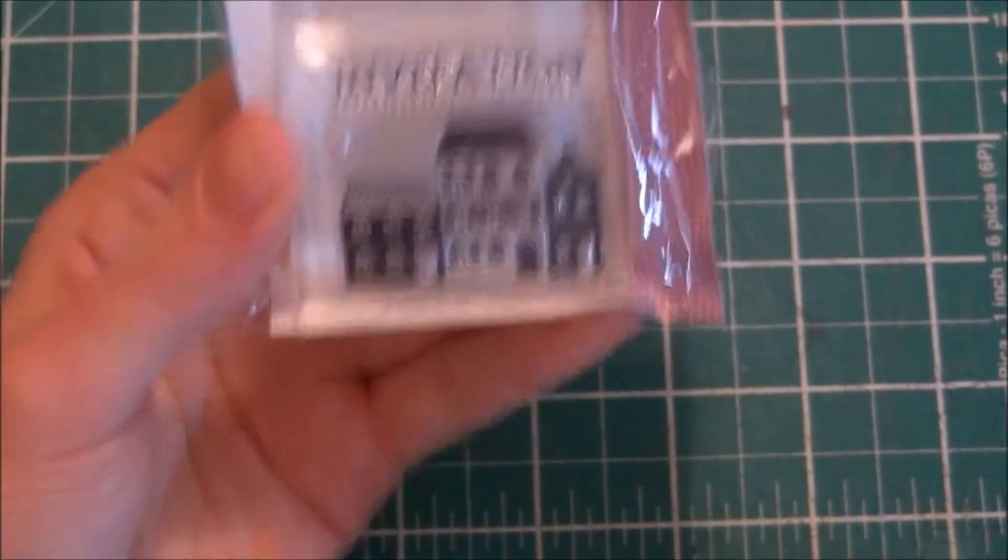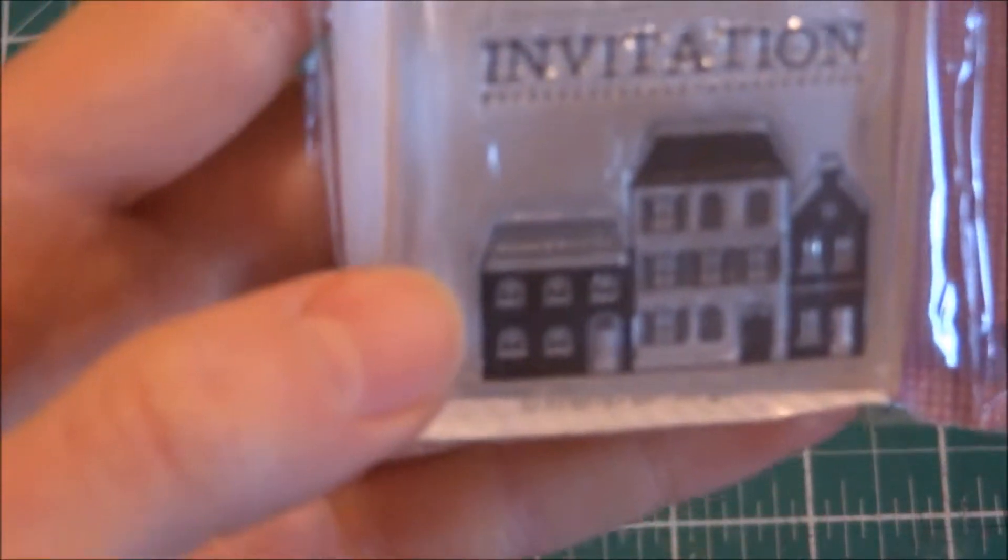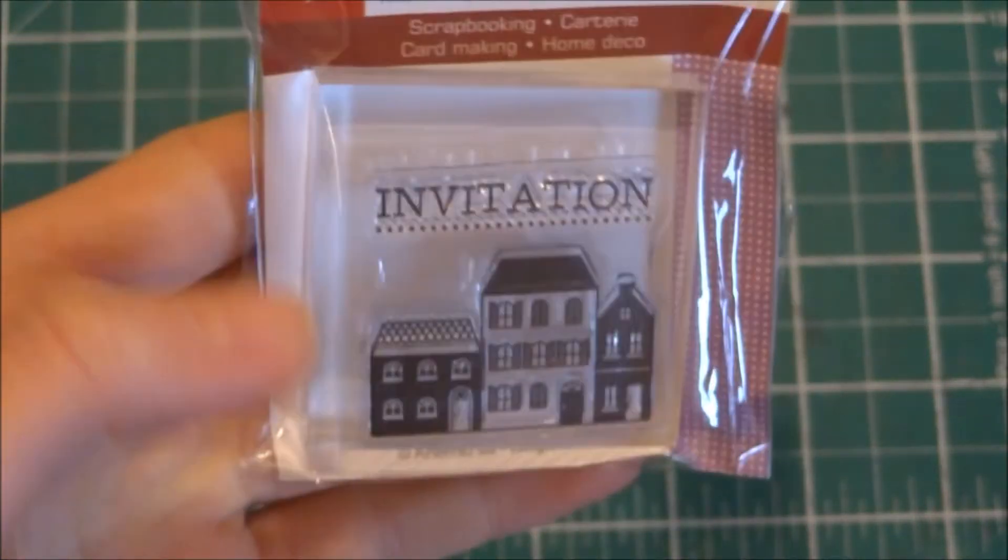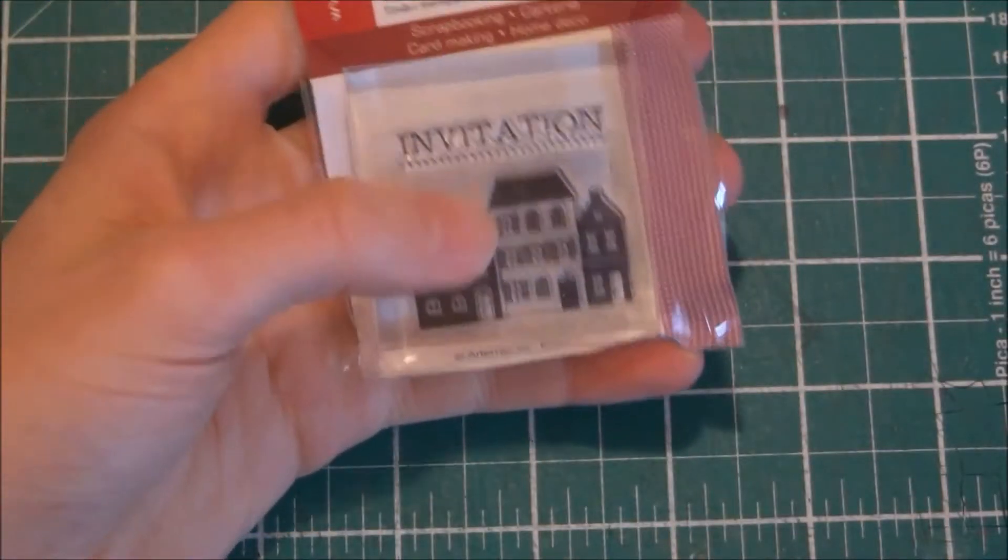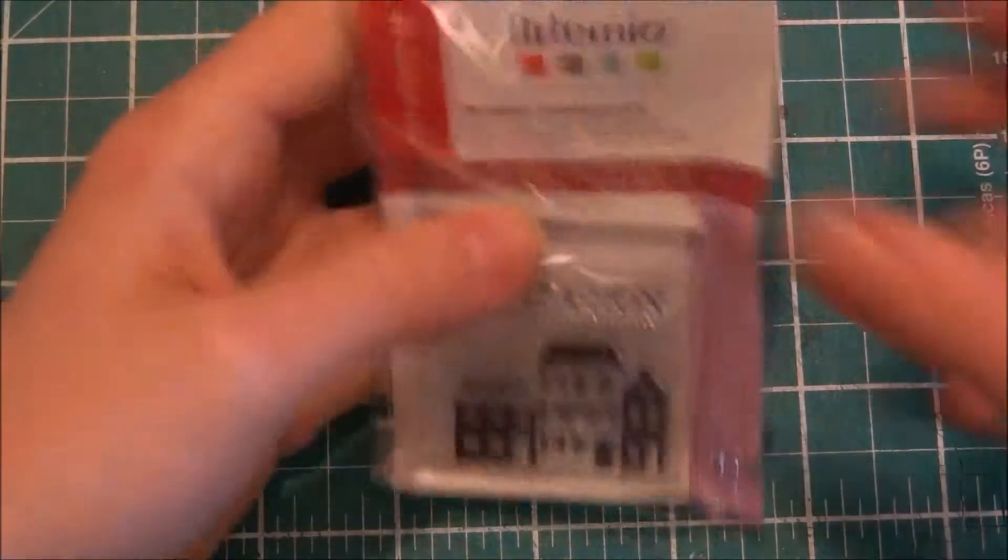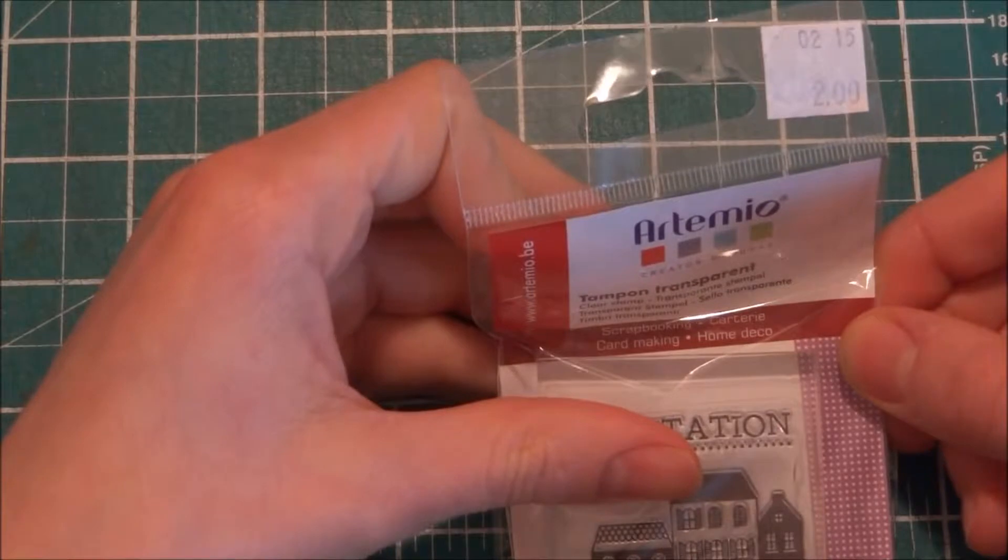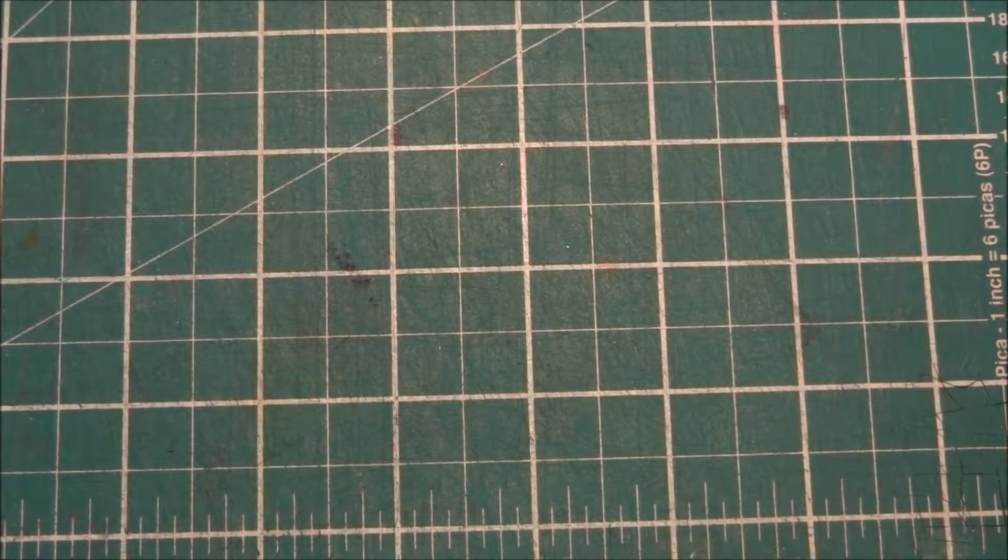I think Hero Arts has a house stamp something like this and I was really inspired. It has 'invitation' on it, and you get the stamp and the acrylic block. They also have hearts and smaller things. It's a 2x2 inch block with no markings on it. It was two euros, which isn't too bad a deal.